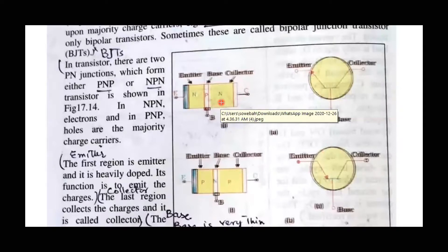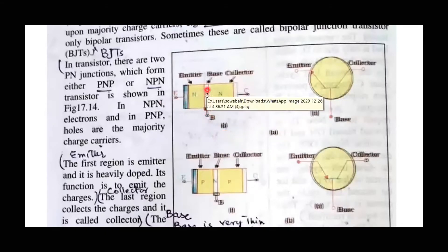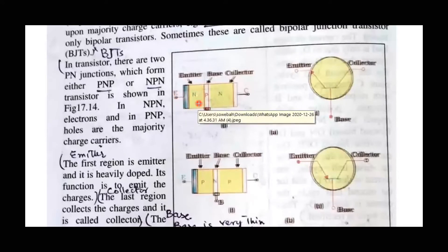The transistor can also be understood through its working process. We connect it to a circuit with an input. We connect the input signal to the emitter-base circuit to amplify the voltage. The emitter always appears in the input circuit. When you apply voltage, the emitter current flows, and the maximum number of electrons diffuse towards the collector side.